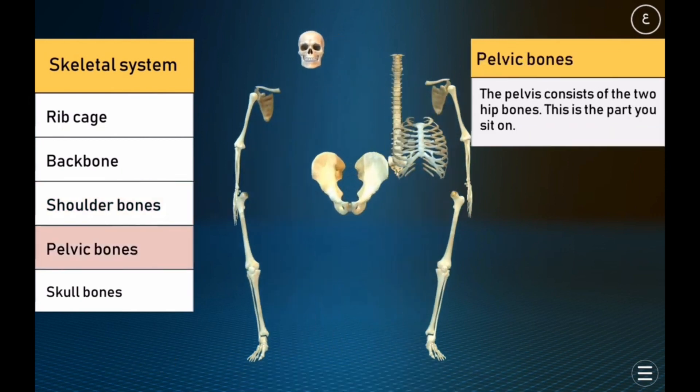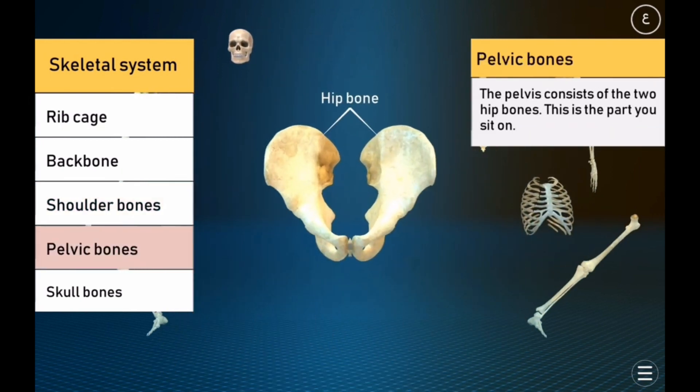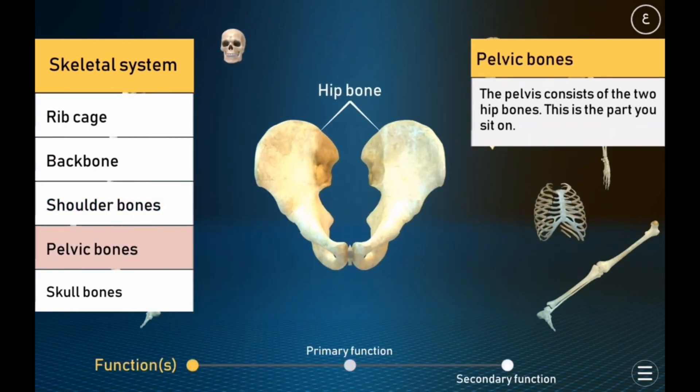Pelvic bone. The pelvis consists of two hip bones. This is the part you sit on.